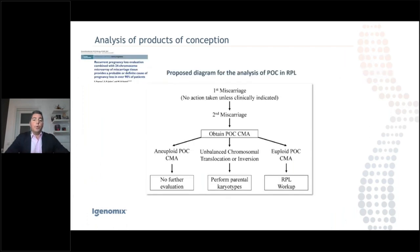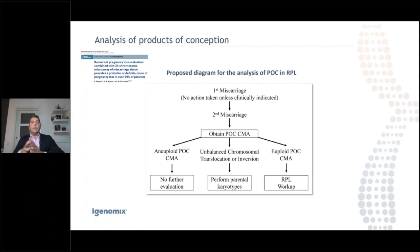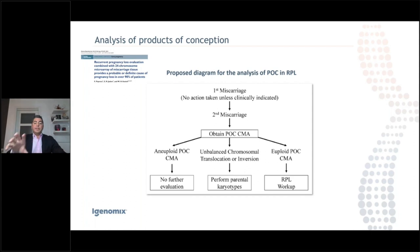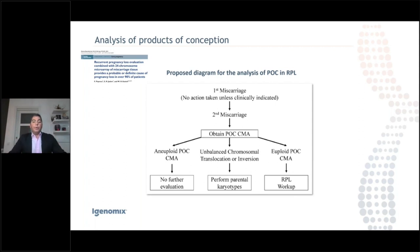The proposed algorithm is: for a first miscarriage, no action is taken unless clinically indicated. At the second miscarriage, obtain the products of conception and analyze with a 24-chromosome platform. If results are aneuploid, no further evaluation is needed — you've found the problem. If there is an unbalanced chromosomal translocation or inversion, perform parental karyotypes. If you have a euploid products of conception result, then follow with the ASRM RPL workup.